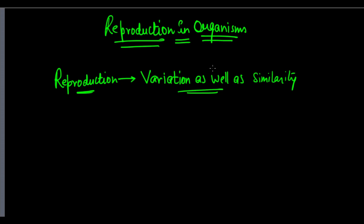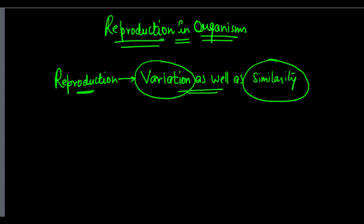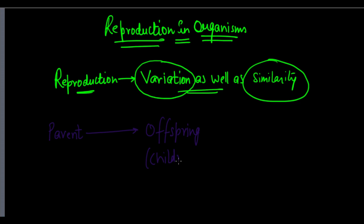If we study reproduction closely, we see that reproduction helps in generating variation as well as some degree of similarity. We have a parent — the main organism — and this parent gives rise to its offspring, that is its children, all the organisms which are produced. This process is called reproduction.